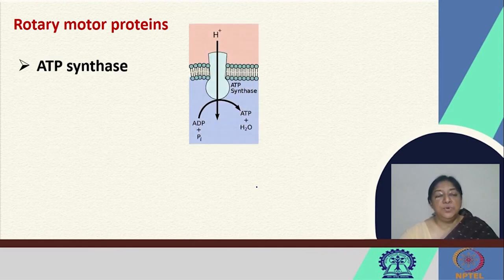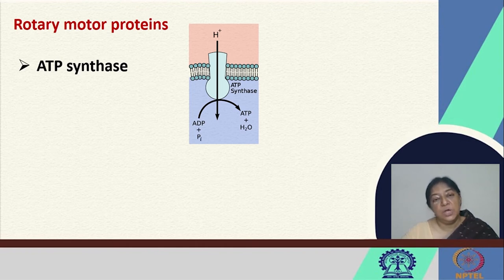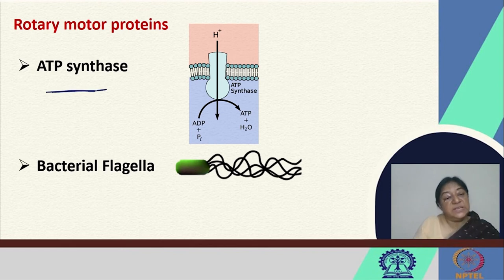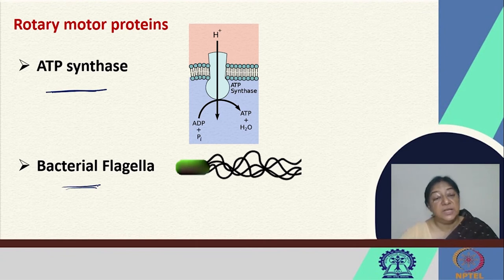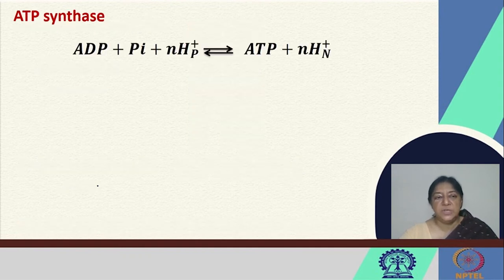The rotary motor proteins include an extremely important one — ATP synthase. As with all motor proteins discussed, ATP hydrolysis is what drives the reaction or enzymatic function to occur. ATP synthase is one very important molecule that uses a specific rotary process to generate ATP. The rotary motor proteins also include bacterial flagella used for movement, with rotation of one subunit relative to the others.